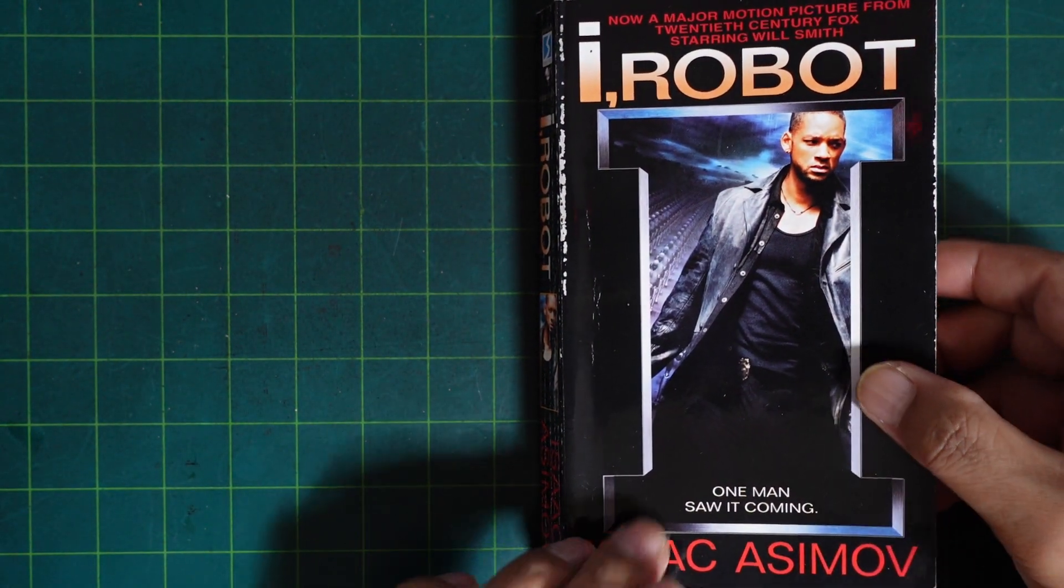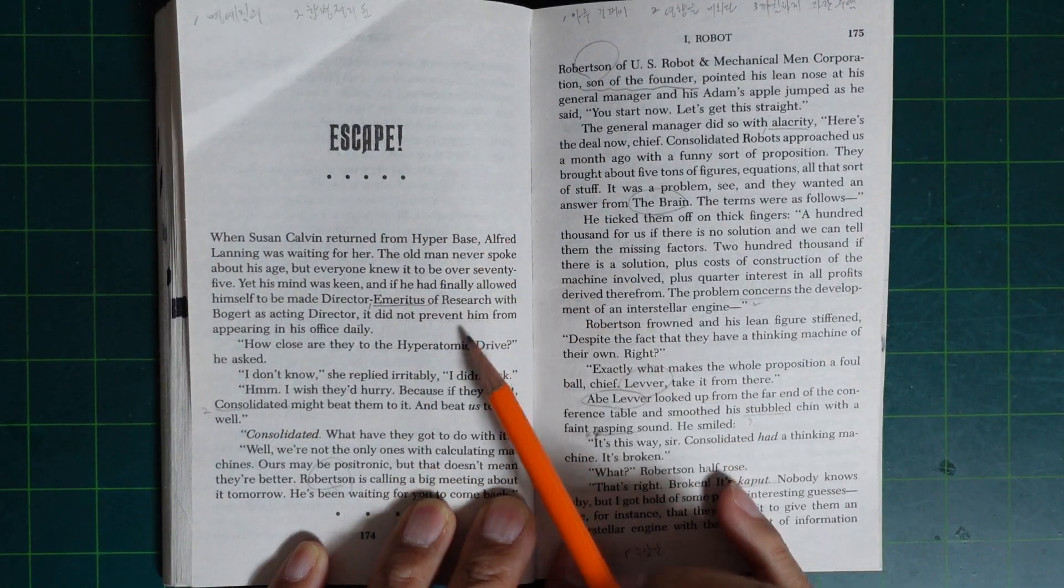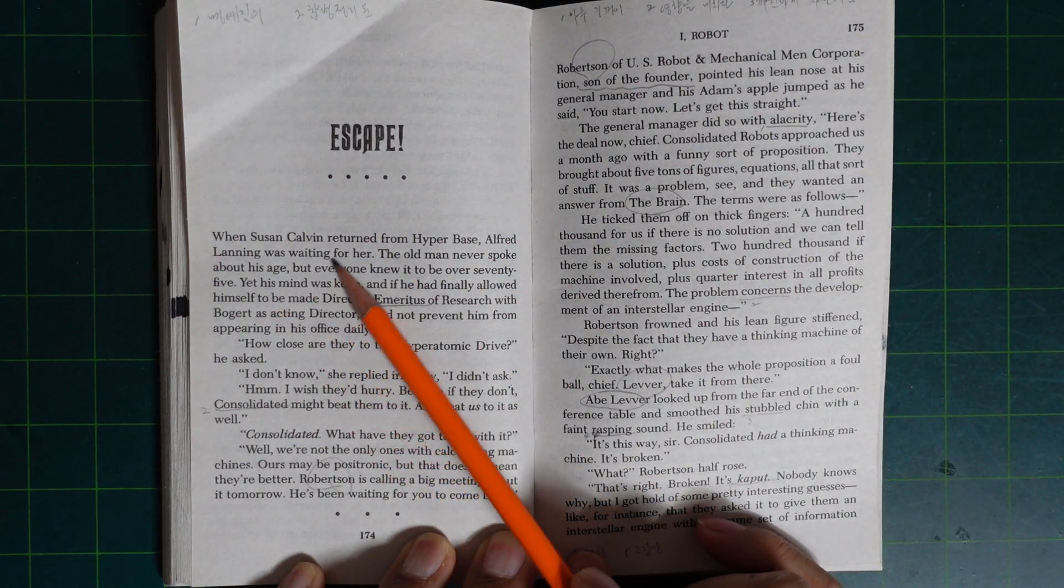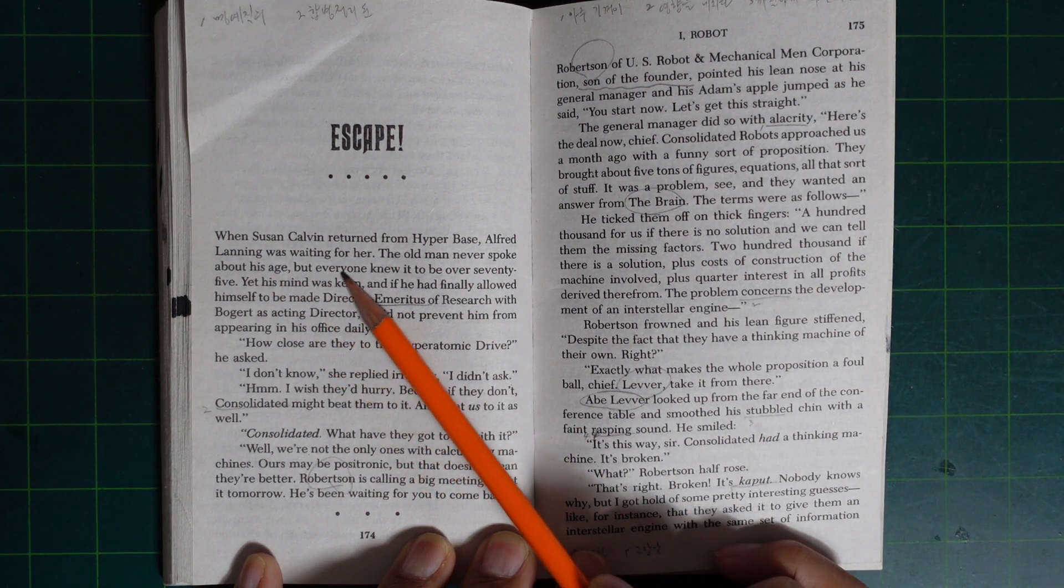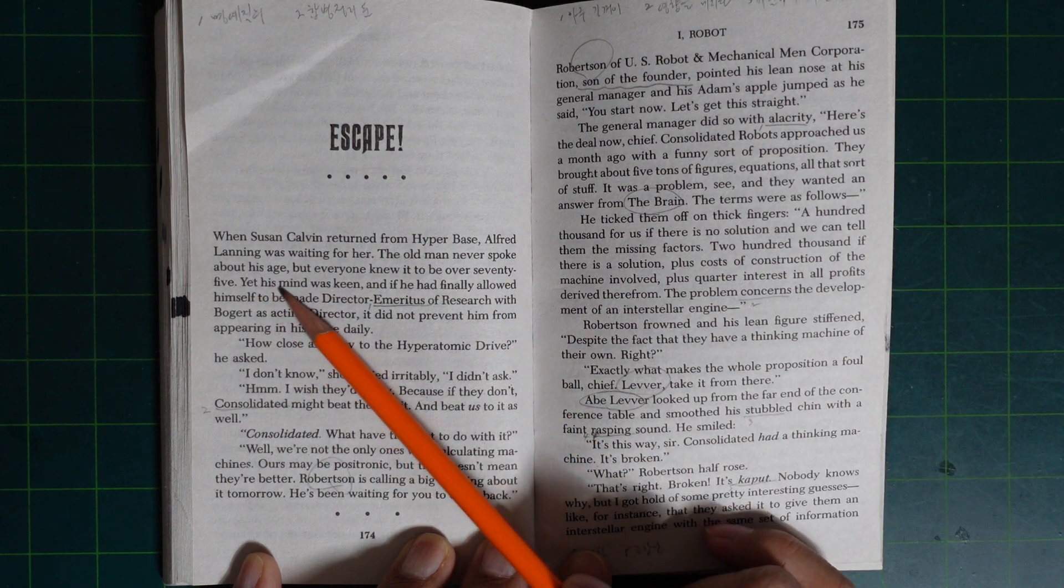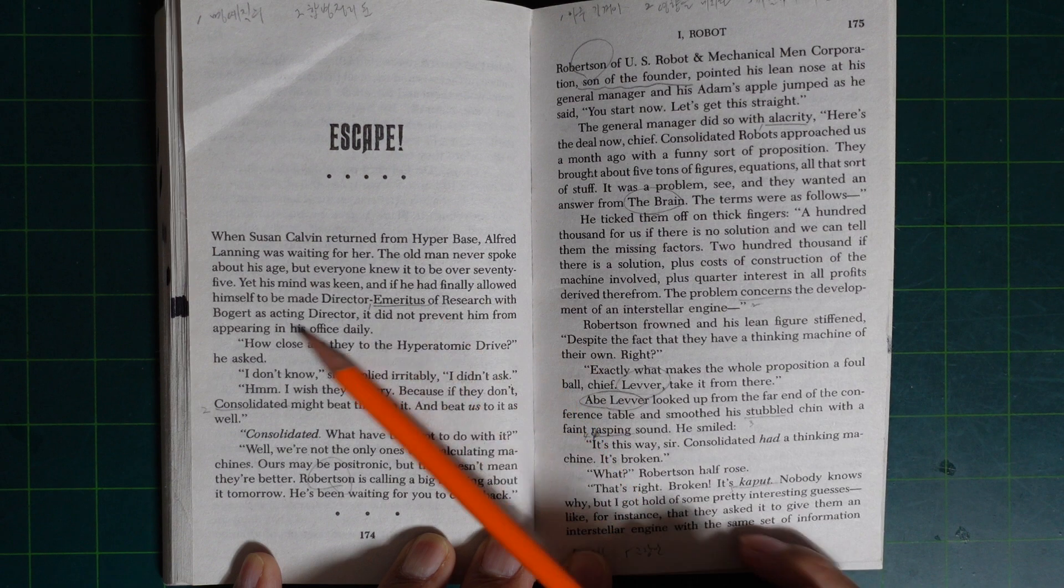I, Robot by Isaac Asimov. Escape. Dr. Susan Calvin returned from hyperbase. Alfred Lenning was waiting for her. The old man never spoke about his age, but everyone knew it to be over 75.